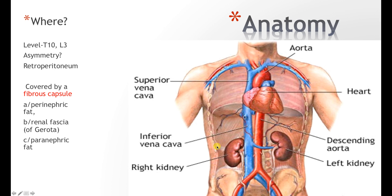One structure not shown here is the adrenal glands. The adrenal glands produce certain hormones important for the body, and they are located just above each kidney.